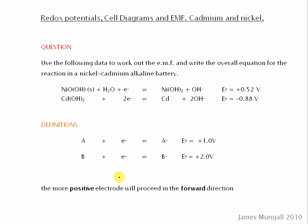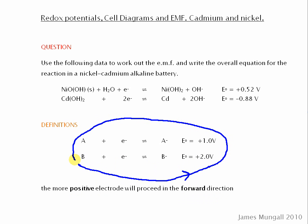To be clear about how we proceed: if we have a half equation where A gains an electron becoming A⁻ with an electrode potential of 1 volt, and B becoming B⁻ has an electrode potential of 2 volts, then the more positive electrode will proceed in the forward direction. So the 2-volt one goes forward — that's reduction — and the 1-volt one goes in the opposite direction — that's oxidation — because 2 is more positive than 1.